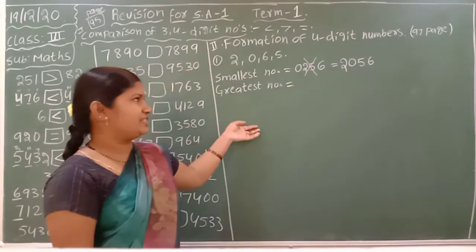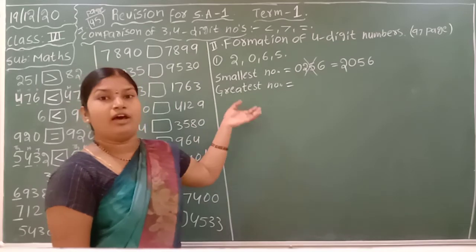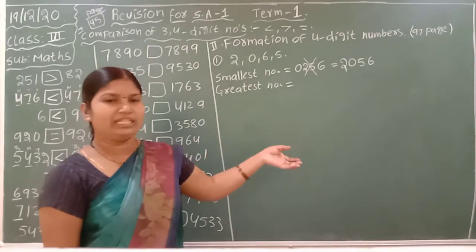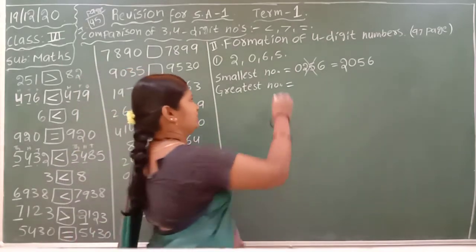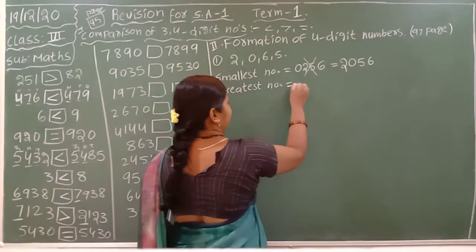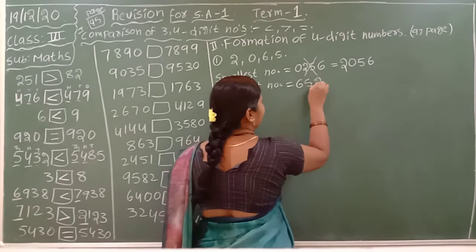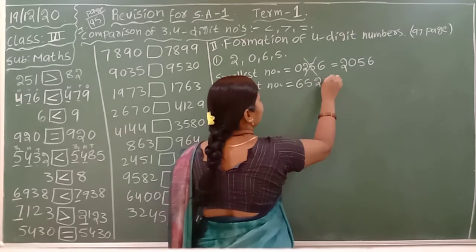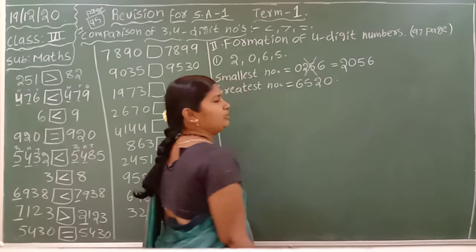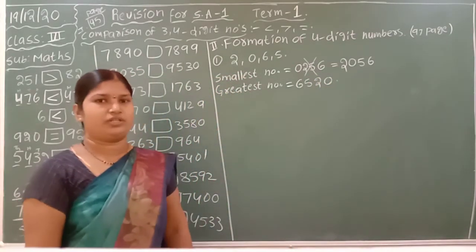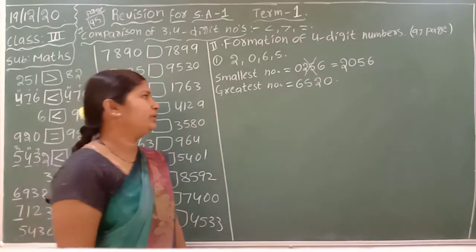Come to the greatest number. Write down the big number first: 6, 5, 2 — and 0 should come last. So the greatest number is 6520.